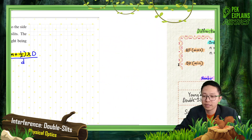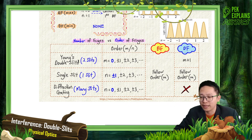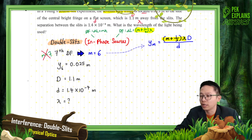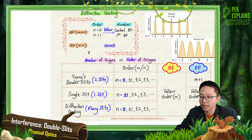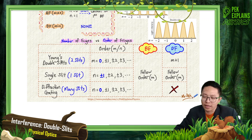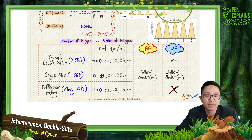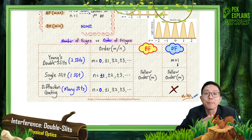For double slit dark fringe, remember: only the bright fringe for double slit, single slit, and diffraction grating all follow order. But for dark fringe in double slit, it's M plus 1 - it does not follow order. Only the single slit dark fringe follows order. For diffraction grating, we don't discuss dark fringe.